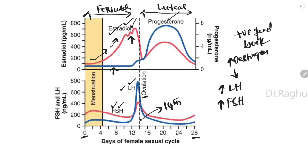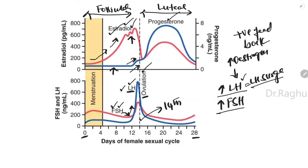As seen in the graph, LH and FSH both increase a few hours prior to ovulation. The increase in LH is greater than the increase in FSH — this is called the LH surge, which is critical for ovulation to occur. The LH surge also causes a slight rise in progesterone prior to ovulation, and together with increased FSH and progesterone, ovulation occurs on day 14.